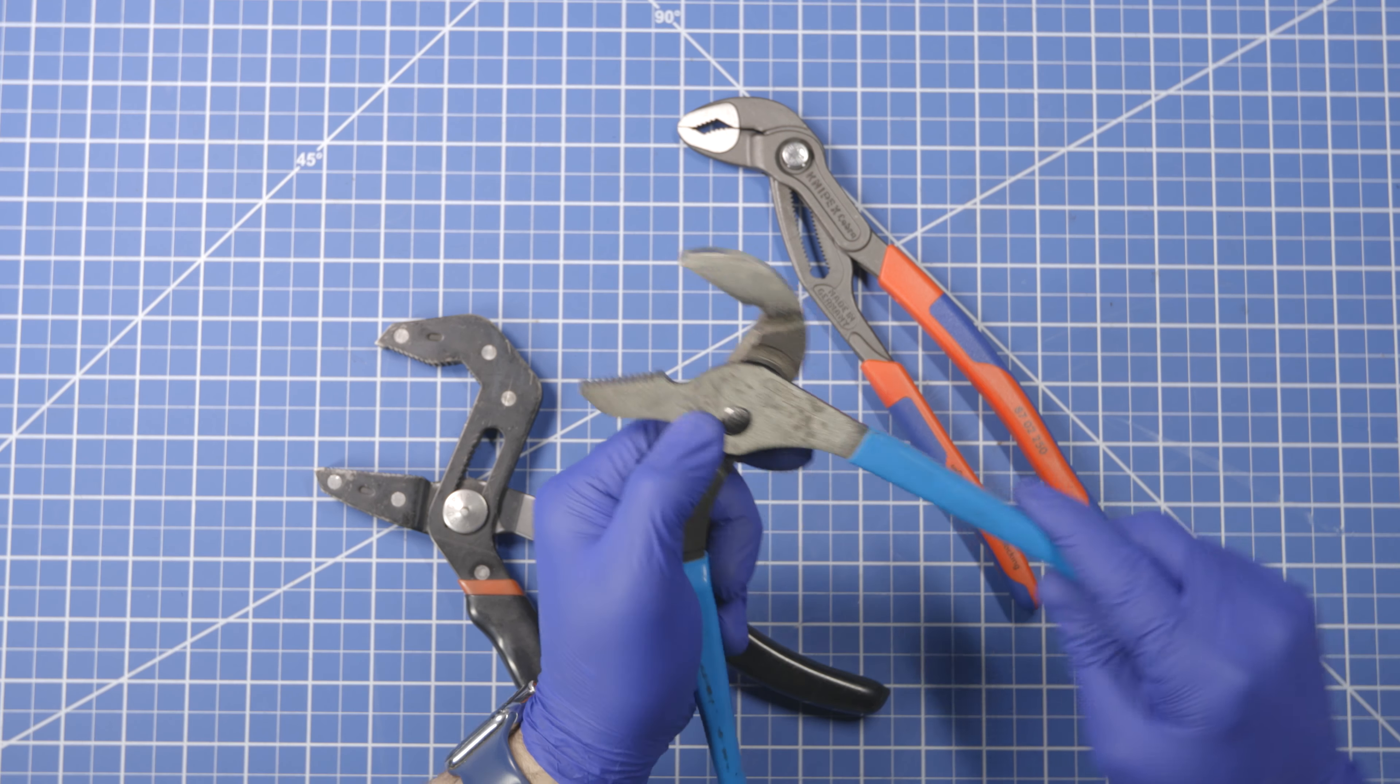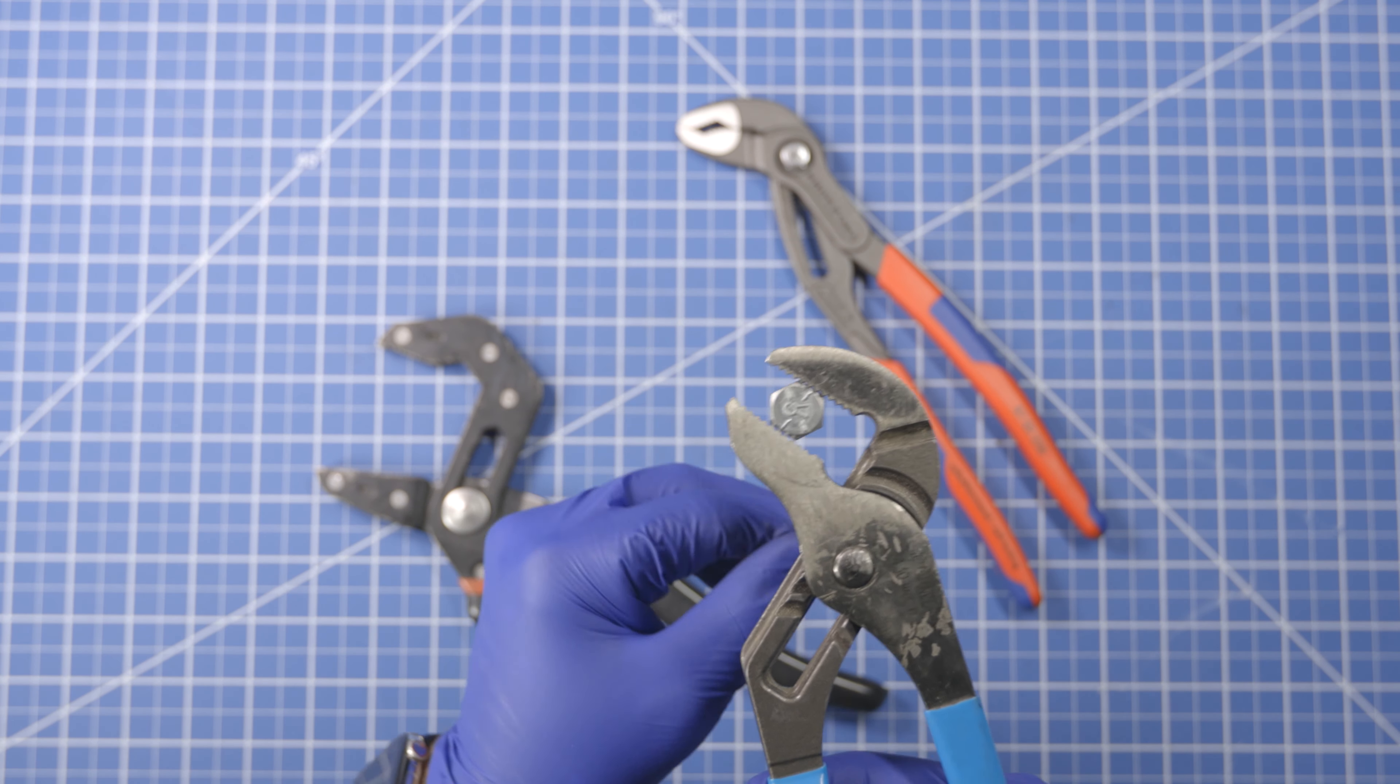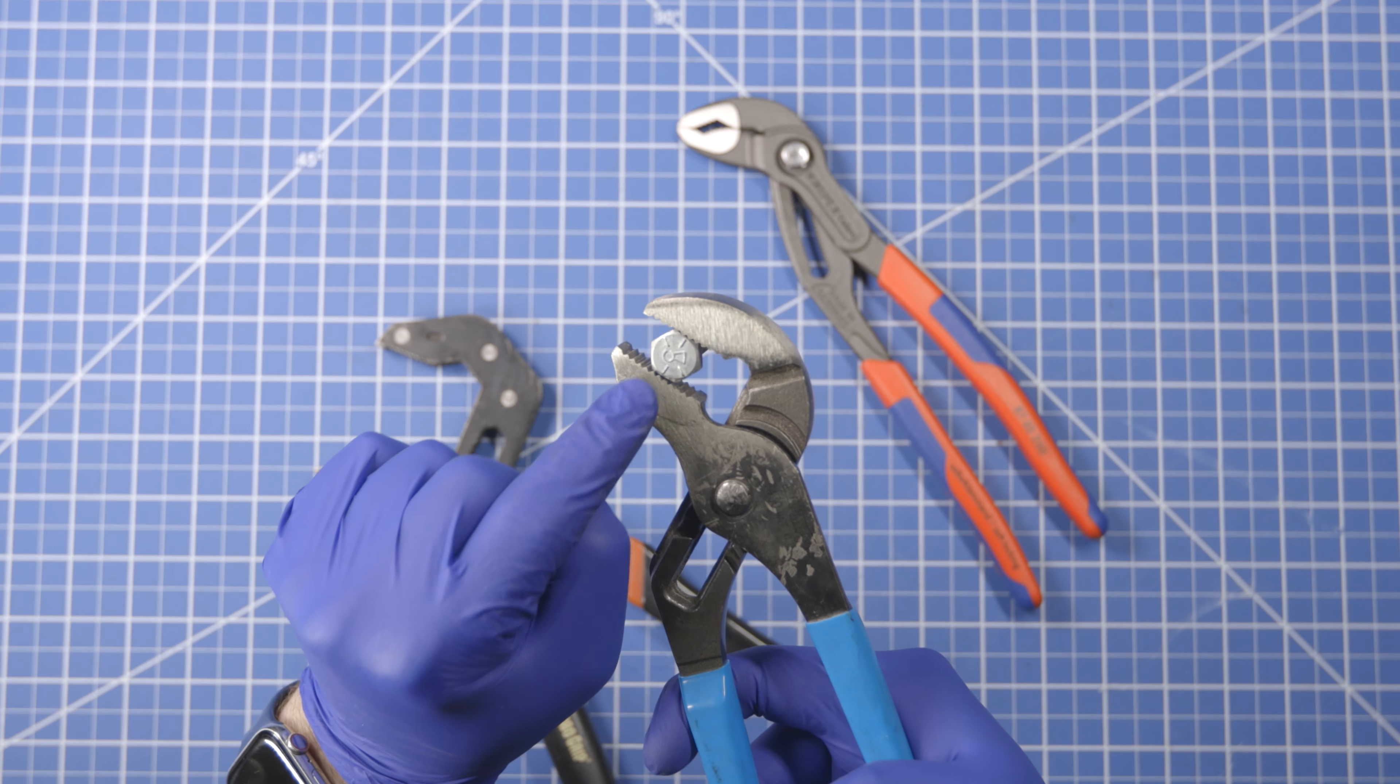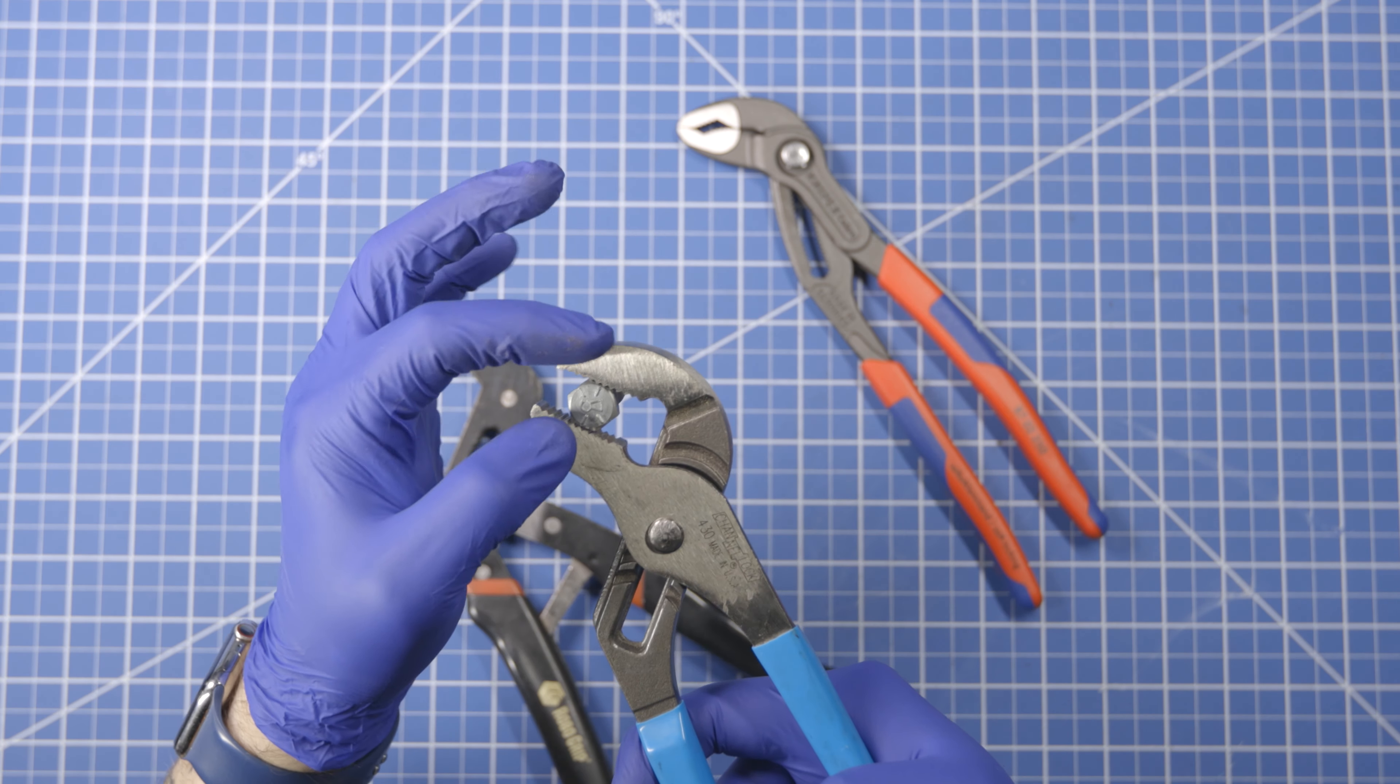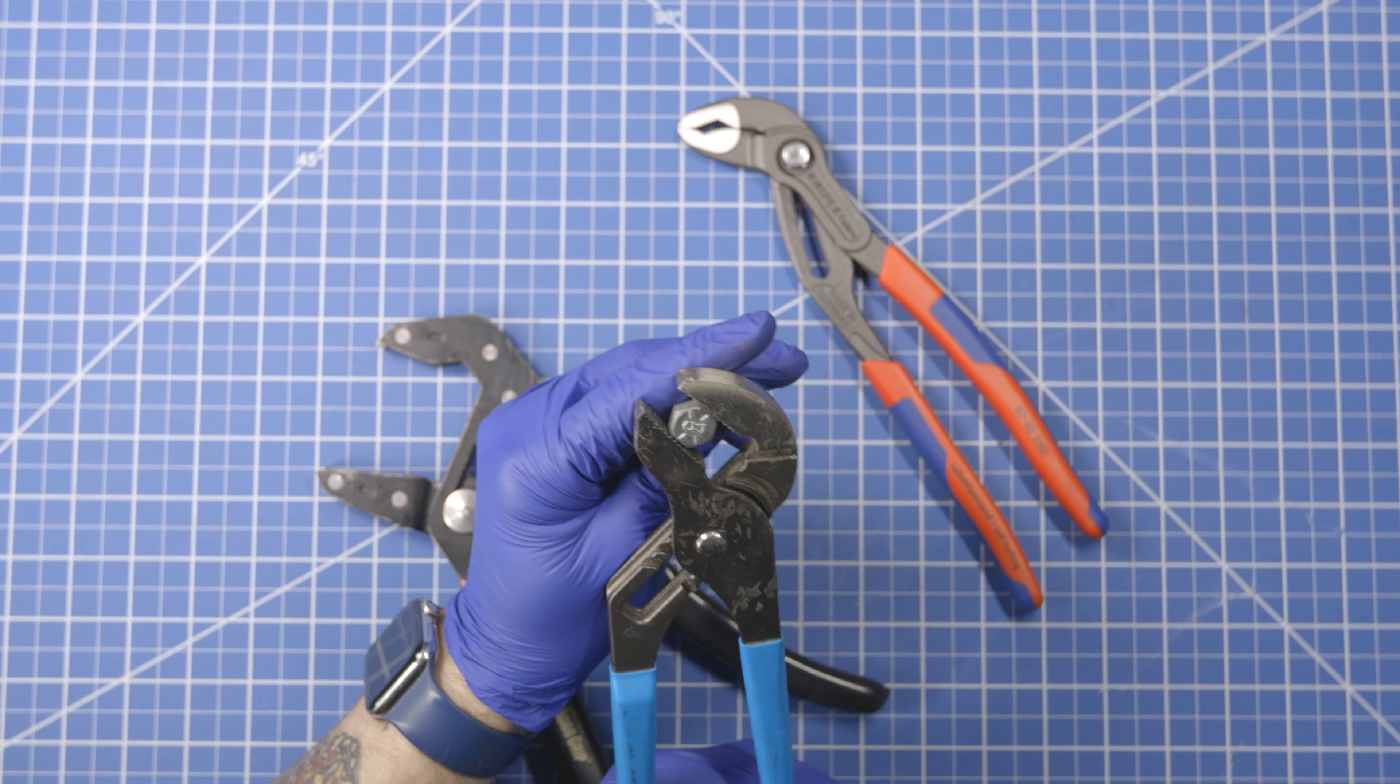When you're using it, you want to adjust it to where it's roughly the size of the bolt you're grabbing onto. You can see that you get it pretty parallel like that, so you want to have as much even pressure on as much surface area as you can.